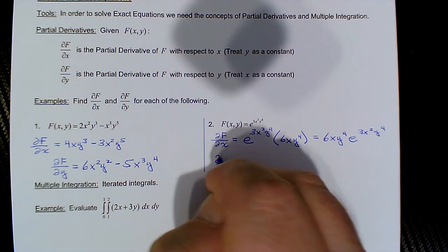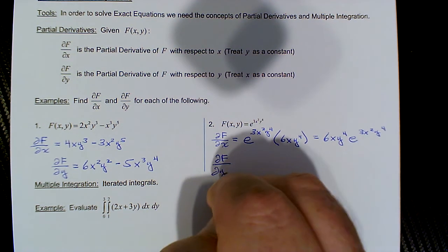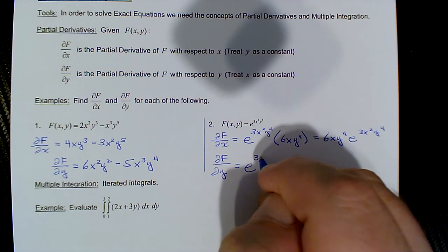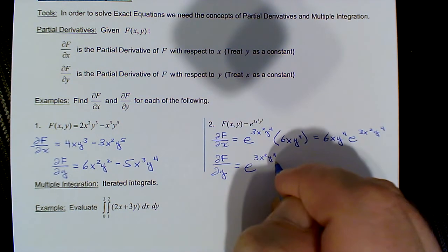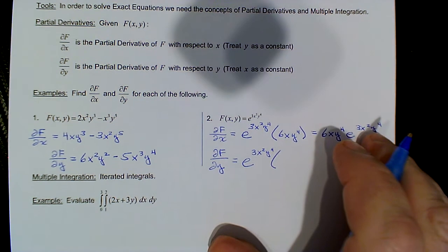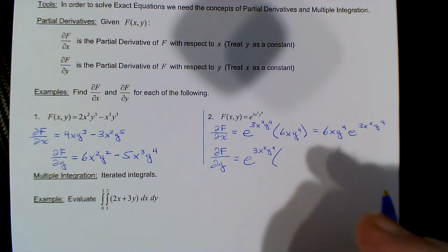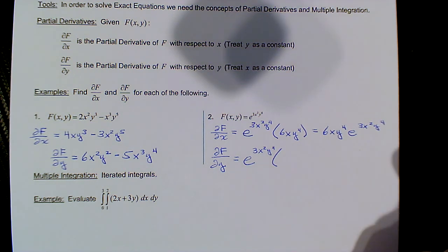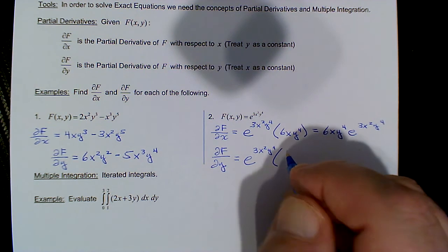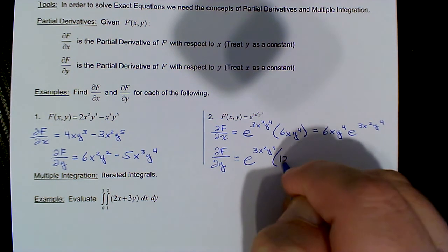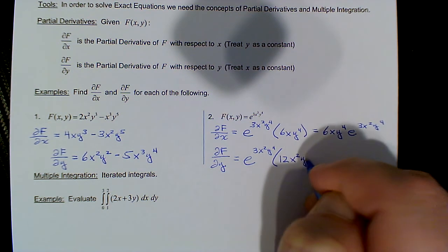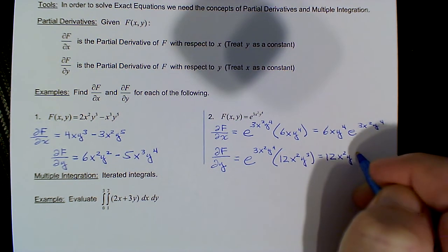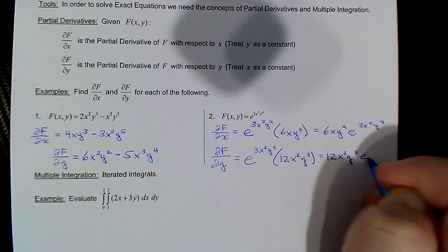Similarly, for the partial of f with respect to y, we again recopy e^(3x²y⁴), but now since we're taking the partial with respect to y, x is held as a constant. The x² tags along, and the derivative of 3y⁴ is 12y³, so we write 12x²y³ and bring that out in front of the exponential factor.